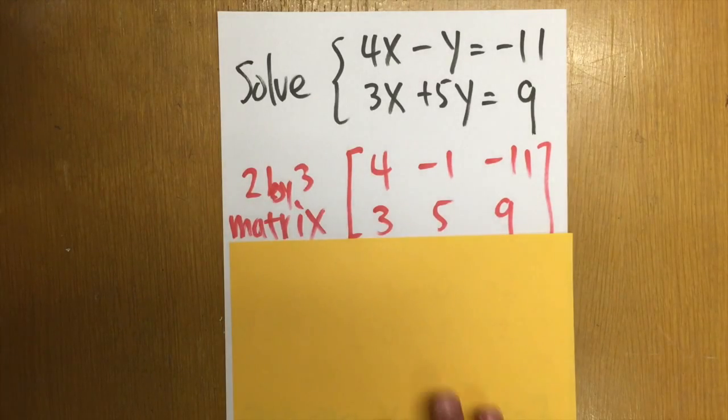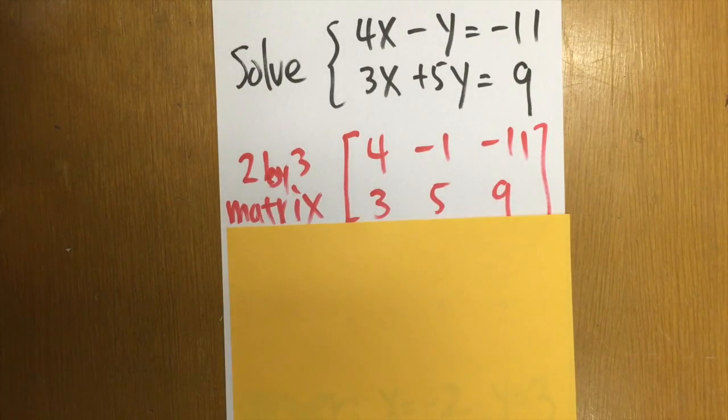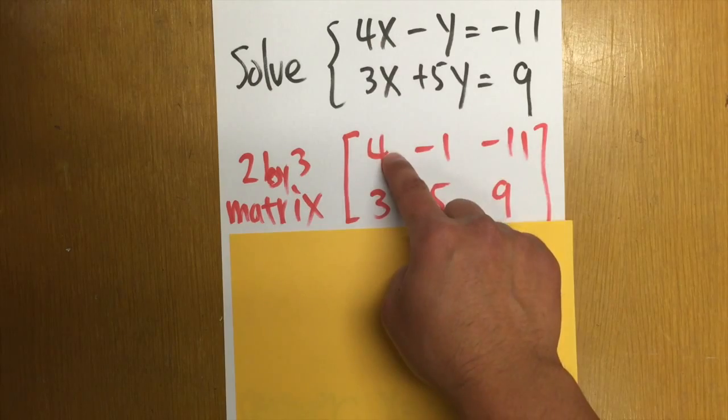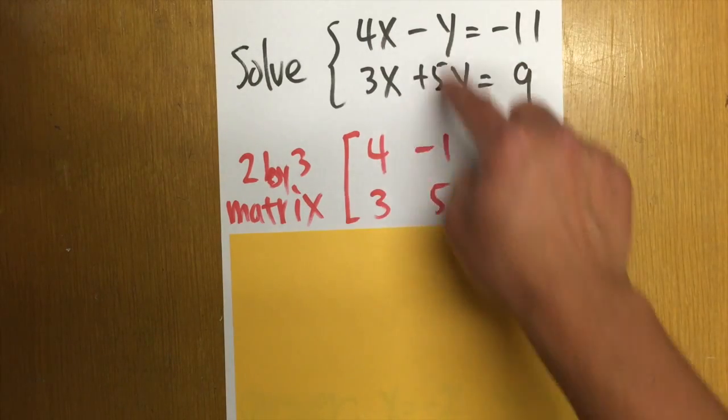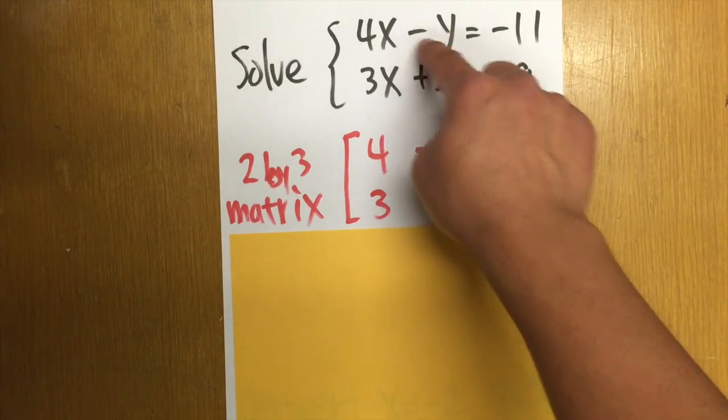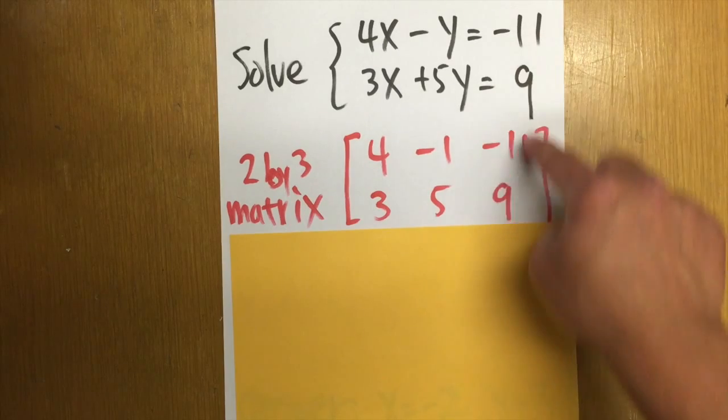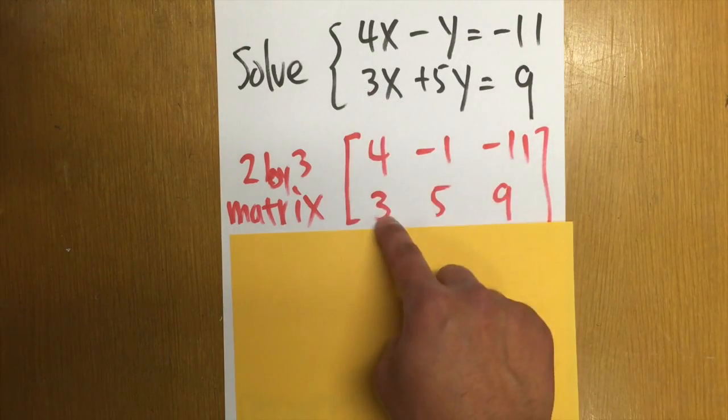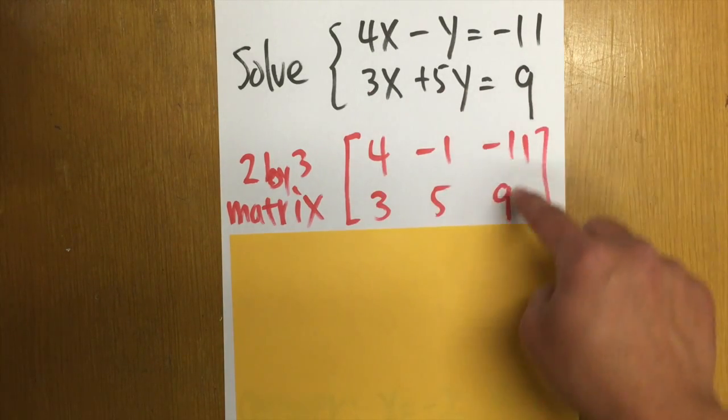So you see that we'll end up with a 2 by 3 matrix. For the first row, we will have the 4 and the negative 1 because that's a coefficient of y right here. That's negative 1. And then negative 11. And then for the second row, we will have positive 3, positive 5, and positive 9.